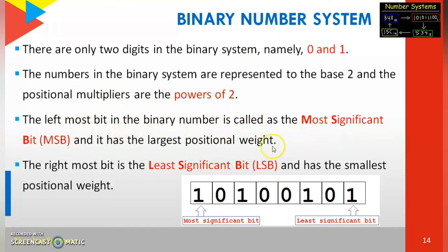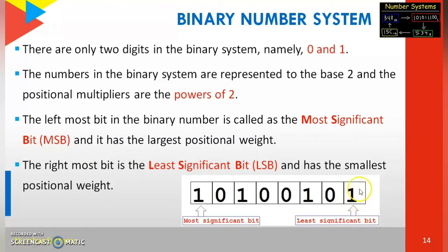The leftmost bit in a binary number is called the Most Significant Bit (MSB). It has the largest positional weight, since positional weight starts from zero going right to left. The rightmost bit is known as the Least Significant Bit (LSB) and has the smallest positional weight, starting from zero. So LSB has the smallest positional value and MSB has the largest positional value.